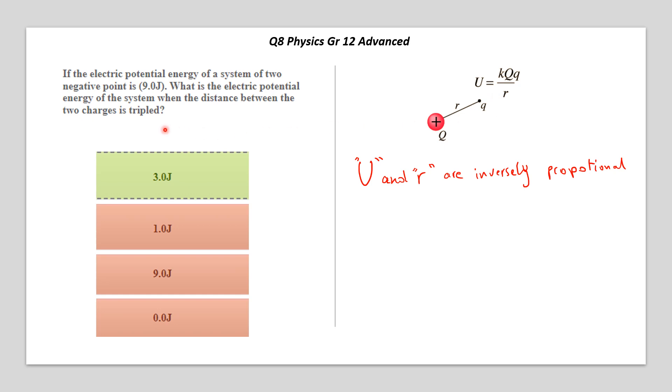So if the distance R is tripled, means multiplied by 3, what will happen to U? What will happen to the electric potential energy? It will be, yes, it will be divided by 3 because they are inversely proportional. So if R is multiplied by 3, U should be divided by 3.